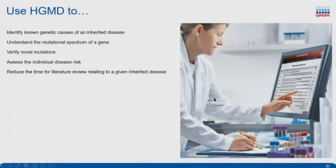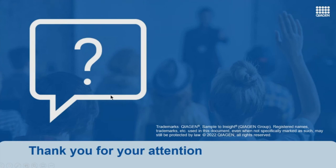Today we looked at the utility of HGMD for variant classification. You saw how it can speed up your workflow by giving you information about historical or legacy names and different transcripts, so you can quickly get through your literature search and reach your answer. You can use HGMD data to visualize or annotate and help with other aspects of analysis. HGMD has many different options for searching — by phenotype, for example — and you can utilize HGMD to help design a panel based on phenotype. Thank you for your time and attention. We're now open for questions.